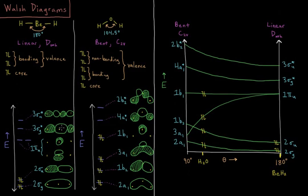Then we have the destructive overlap of the 2s and the 1s orbitals, 3 sigma g star, and the destructive overlap of 2pz and the 1s orbitals, 3 sigma u star.